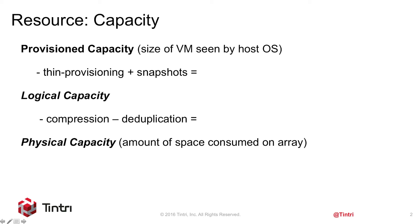Physical capacity is the size of the virtual machine after thin provisioning, compression, and deduplication. This is the amount of physical space actually consumed by the VM on the array.